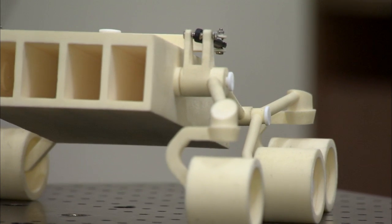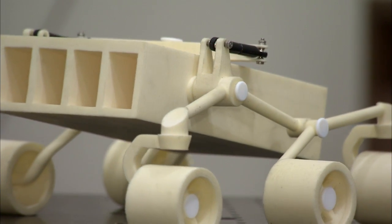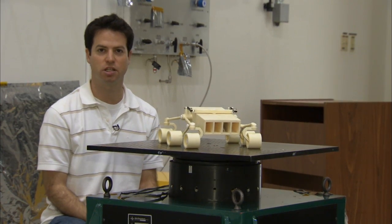Now we know what mass properties are, how do we go about measuring them? To do that, we need a special machine called a spin table.